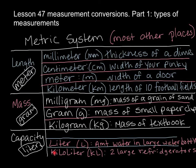A kiloliter — kilo meaning a thousand — is a multiple of the liter. It's a thousand liters, so that would be a thousand large water bottles. It would be about the same as two large refrigerators filled up with water. So a kiloliter is the capacity of two large refrigerators — that's a lot.